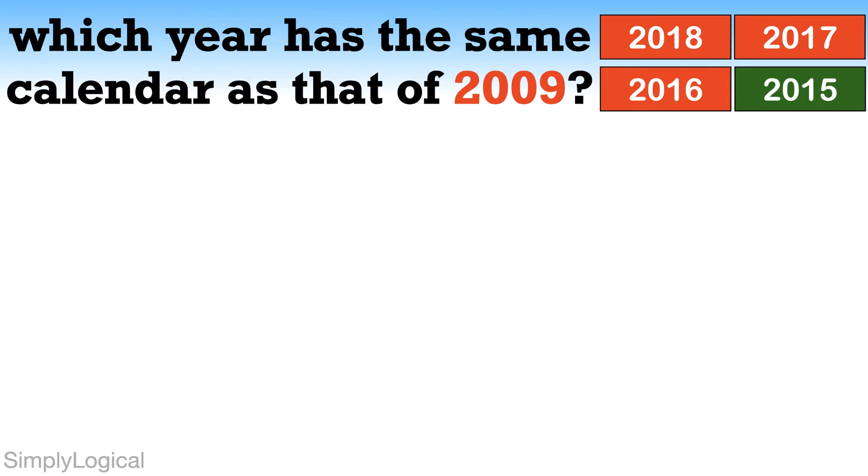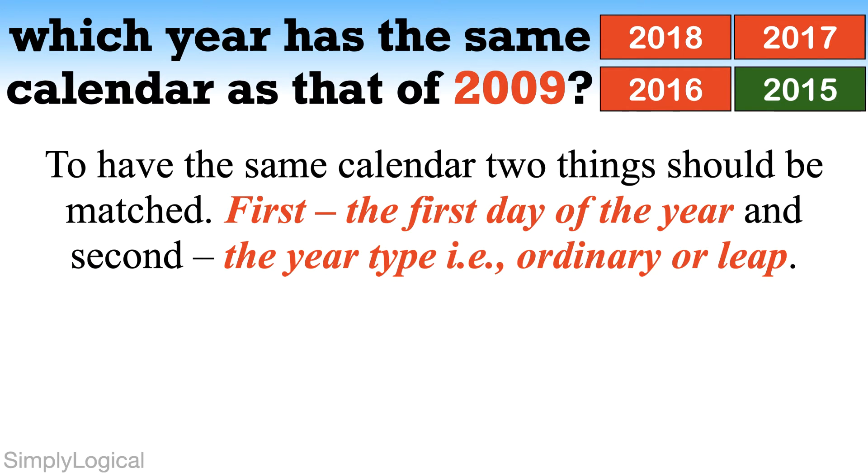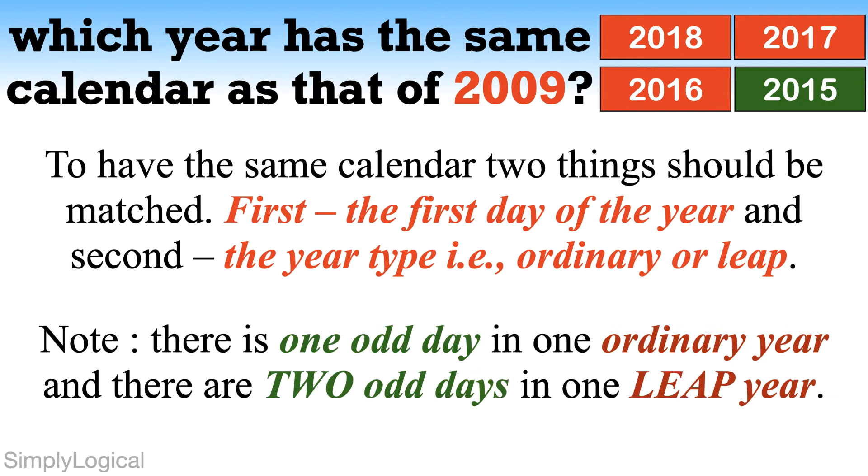See, to have the same calendar, two things should be matched. First, the first day of the year, and second, the year type—that is, ordinary or leap year. Also remember, there is one odd day in one ordinary year and there are two odd days in one leap year.